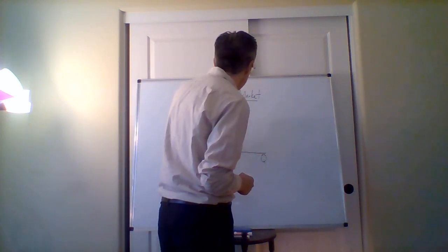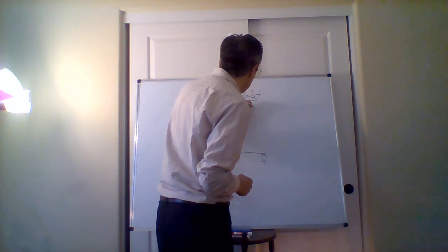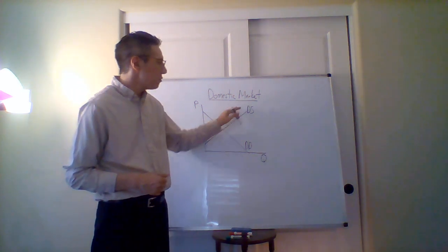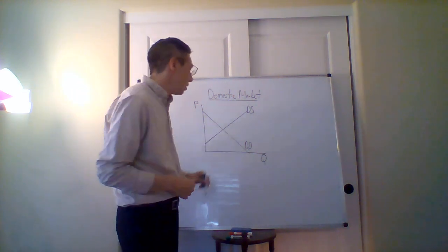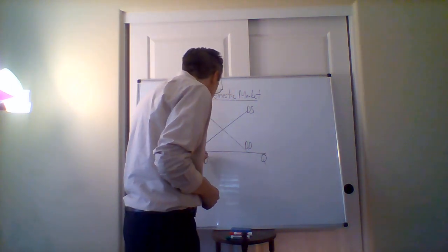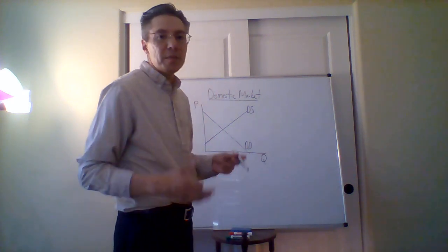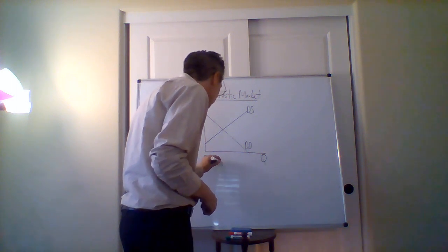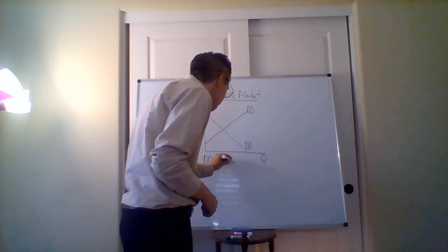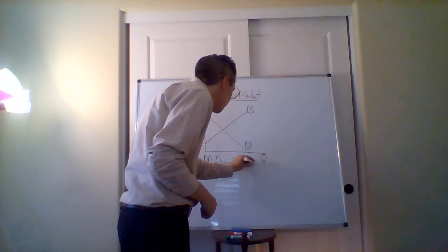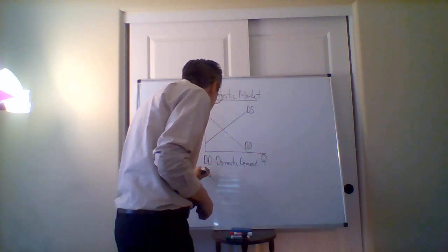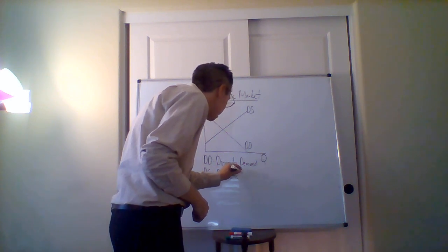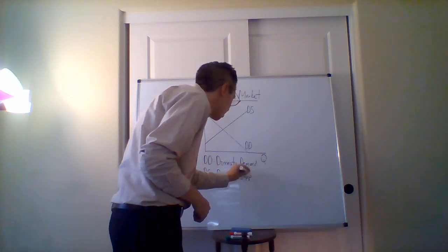A downward sloping demand curve, an upward sloping supply curve, but you'll notice the difference here is that there's an extra 'D' in front of both of these. What does that mean? The 'D' means domestic. Since we're dealing with a domestic market, we're talking about domestic demand and domestic supply - the demand and supply within this particular country for this particular good.